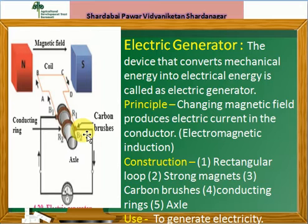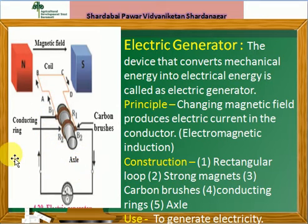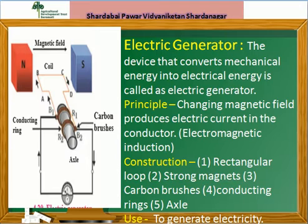Hence, in the external circuit, current flows from B1 to B2 — means opposite to the previous half rotation. This repeats after every half rotation and alternating current is produced, and so it is called an AC generator. अशा पद्धतीने current generate झाला, परंतु तो alternating आहे, म्हणजे त्याची direction half rotation मध्ये change होते, आणि म्हणून याला AC generator म्हणतो.